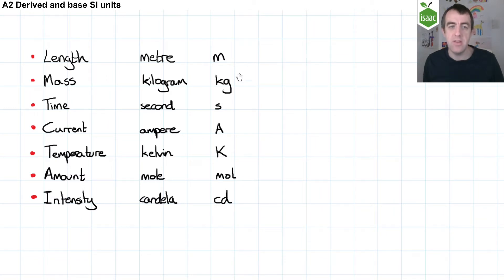The unit for mass is the kilogram, with the symbol kg. The unit for time is the second, with the symbol s. The unit for current is the ampere, with the symbol A.